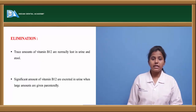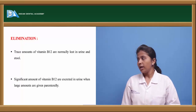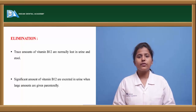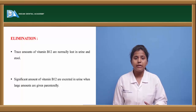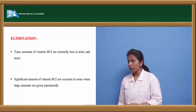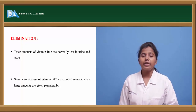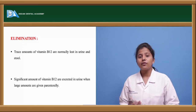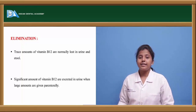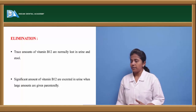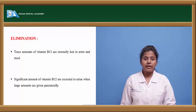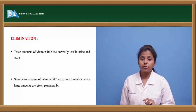Regarding elimination, small or trace amounts of vitamin B12 are excreted in the urine. If large amounts are present in the body, or when vitamin B12 is given parenterally and cannot be absorbed, the excess is also excreted through urine. The elimination of vitamin B12 depends on the route of administration as well as the dose administered to the patient.